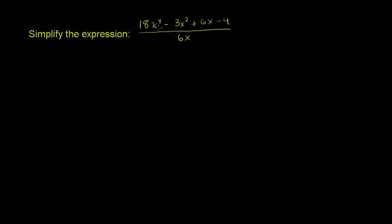Simplify the expression 18x to the fourth minus 3x squared plus 6x minus 4, all of that over 6x.